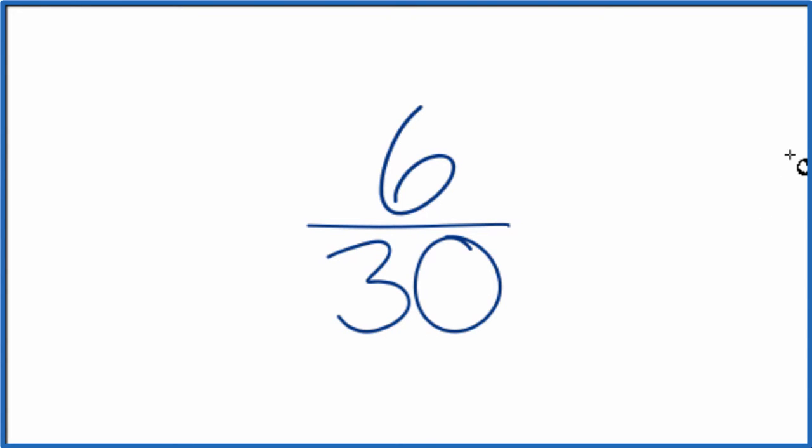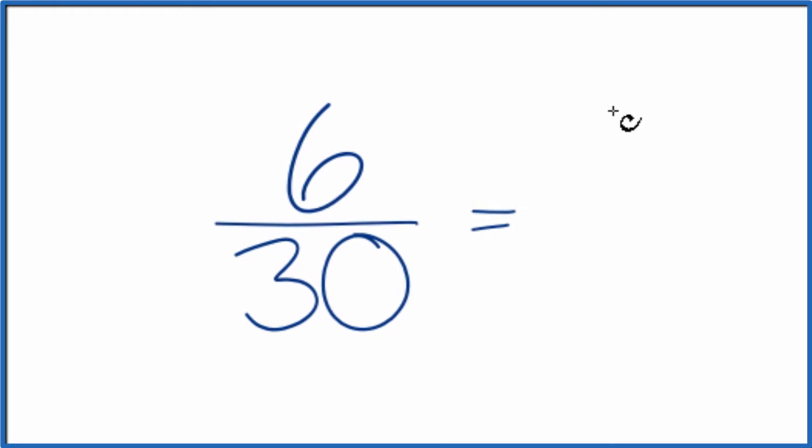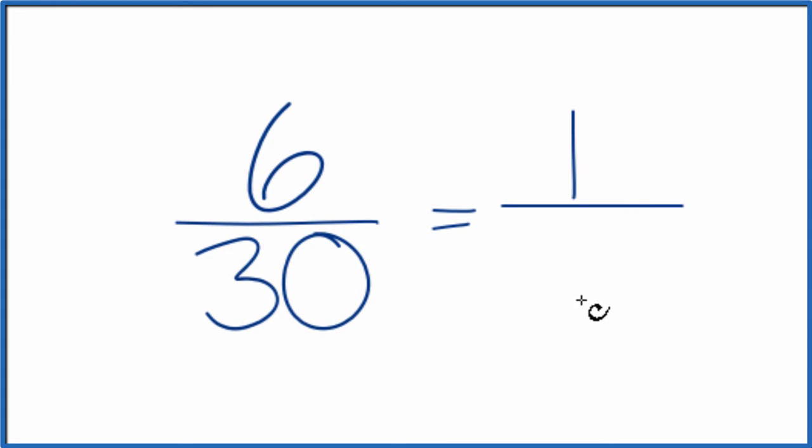To do that, we need to find a common factor, something that goes into 6 and 30. It turns out that 6 goes evenly into 30. We know that 6 divided by 6 is 1, and 30 divided by 6, that's 5. So we've simplified the fraction 6 thirtieths down to 1 fifth.